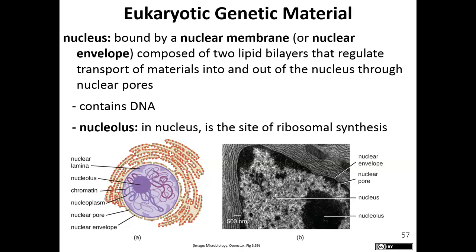DNA is the genetic material that dictates all the structures of the cell — basically the brain. The nucleolus is found within the nucleus and is the site for ribosome synthesis. Ribosomes are the structures used for protein synthesis. We produce ribosomes and send them out through the nuclear pores; those ribosomes will either be found in the cytoplasm or embedded on the endoplasmic reticulum.